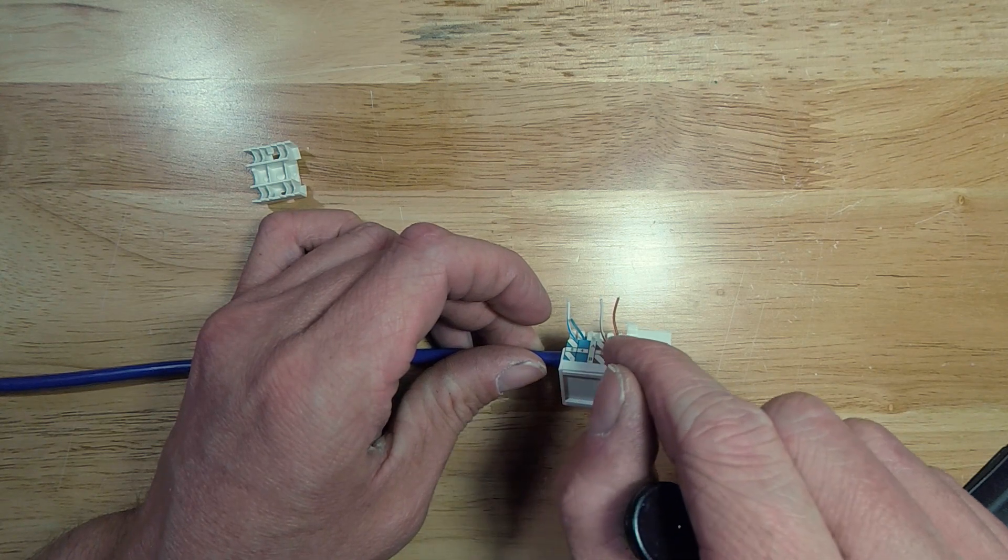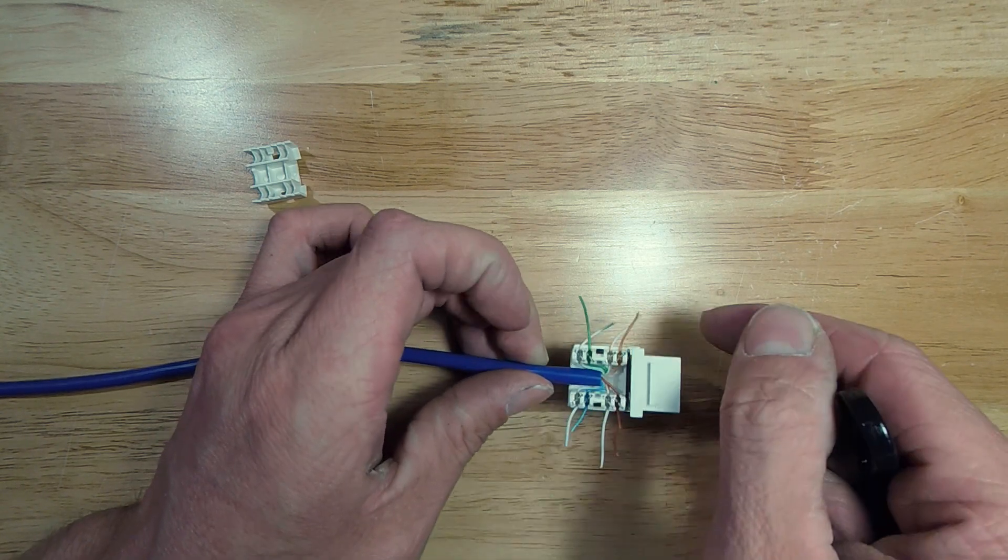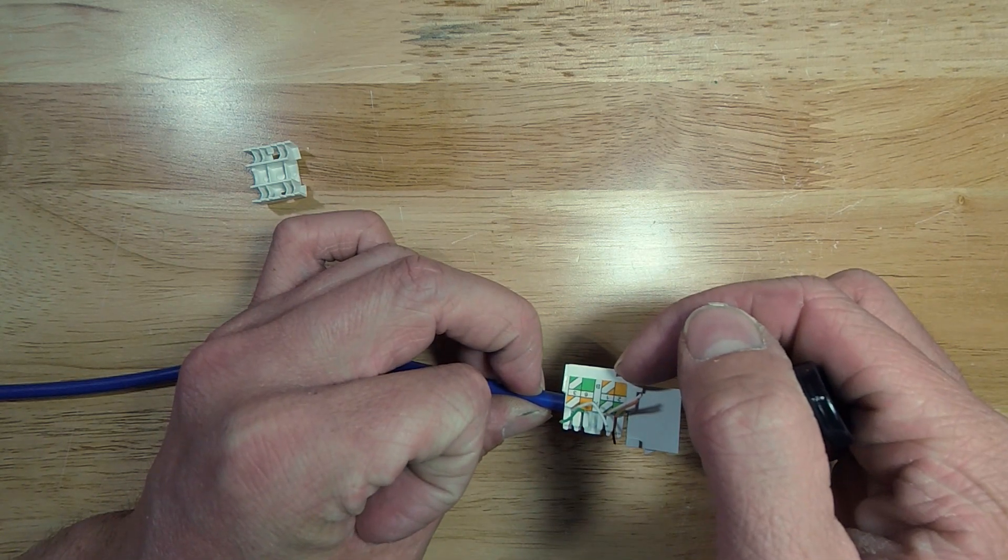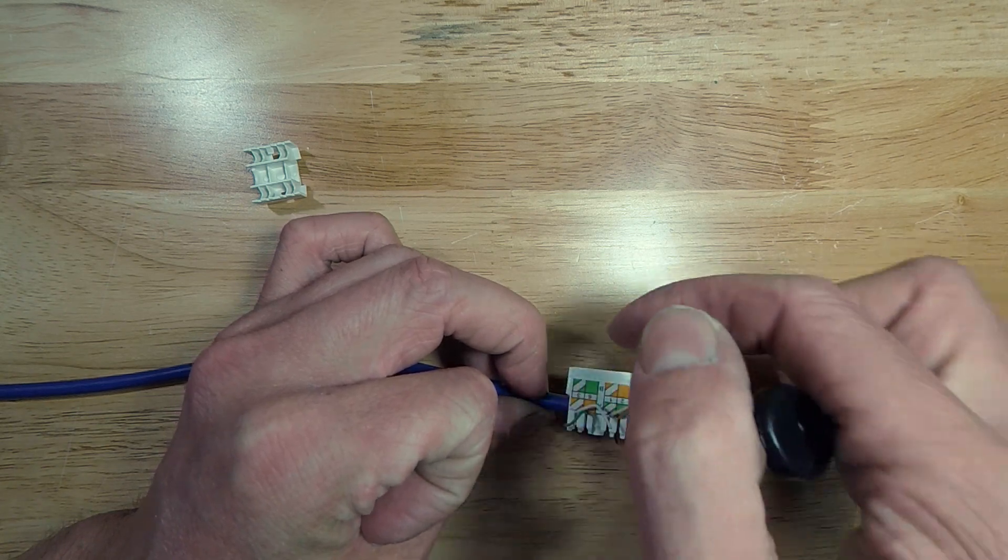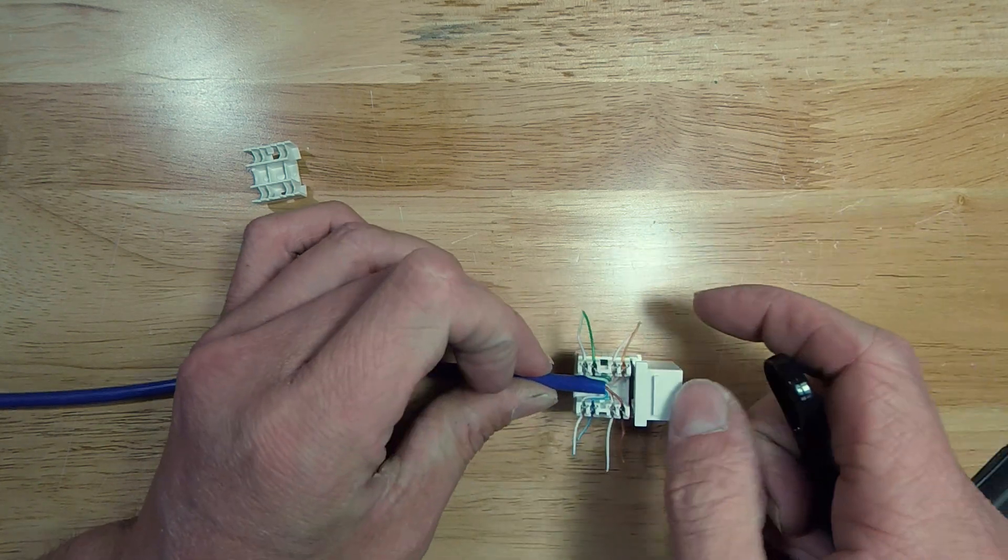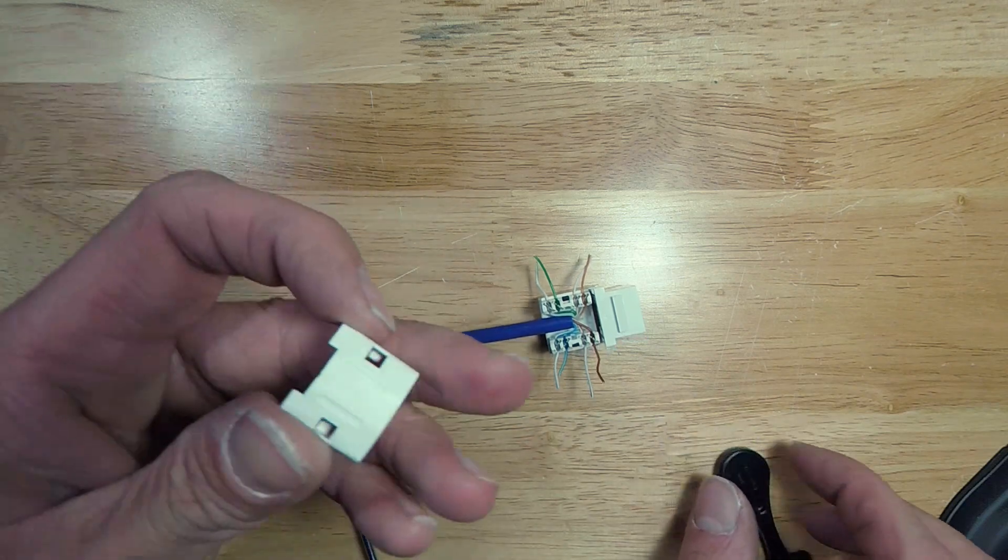Confirm blue white, blue, brown white, brown, orange, orange white, green, and green white. Then we're gonna grab your protective cover. It has little bits in it that keep your wires retained when it's in the wall.